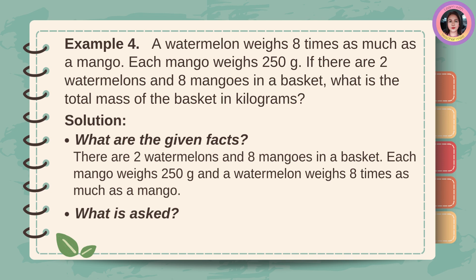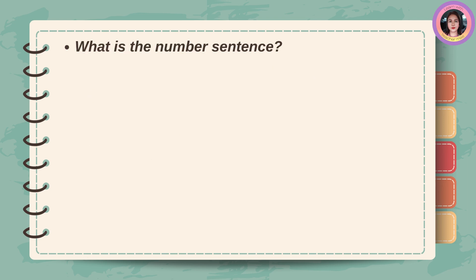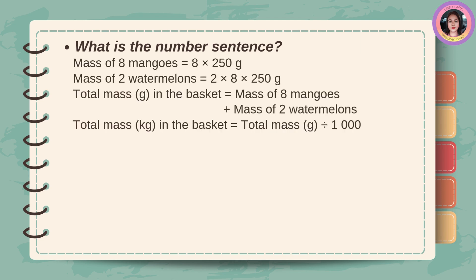What is asked? What is the total mass of the basket in kilograms? Number sentence: Mass of 8 mangoes equals 8 times 250 grams. Mass of 2 watermelons equals 2 times 8 times 250 grams. Total mass in grams equals mass of 8 mangoes plus mass of 2 watermelons. Total mass in kilograms equals total mass in grams divided by 1,000.